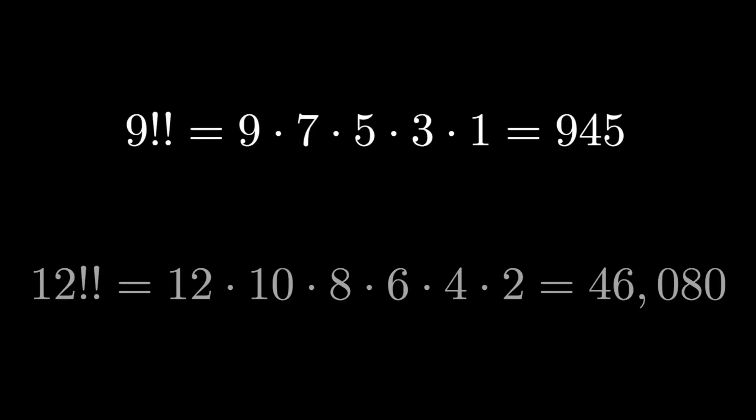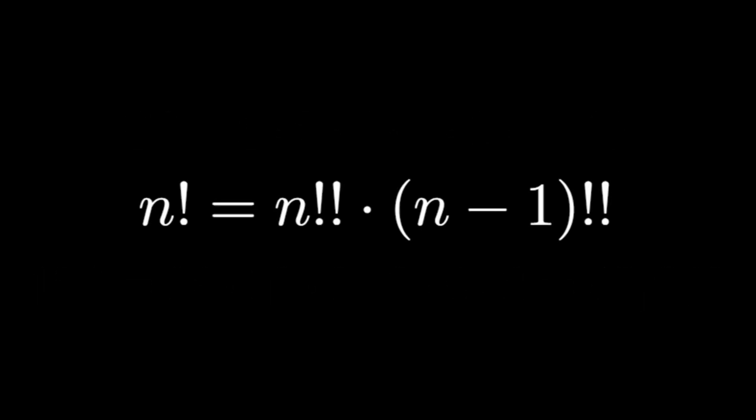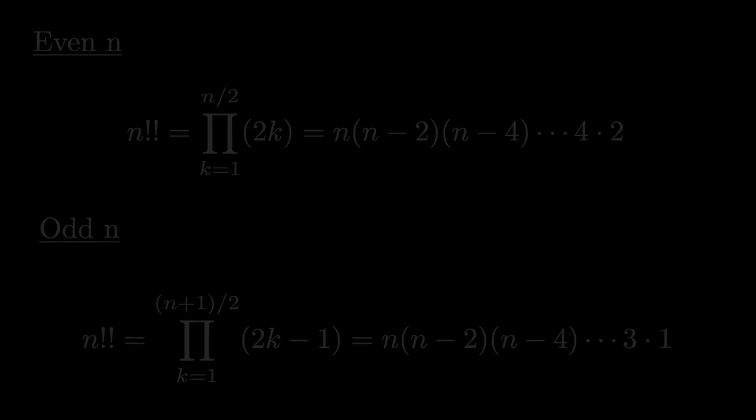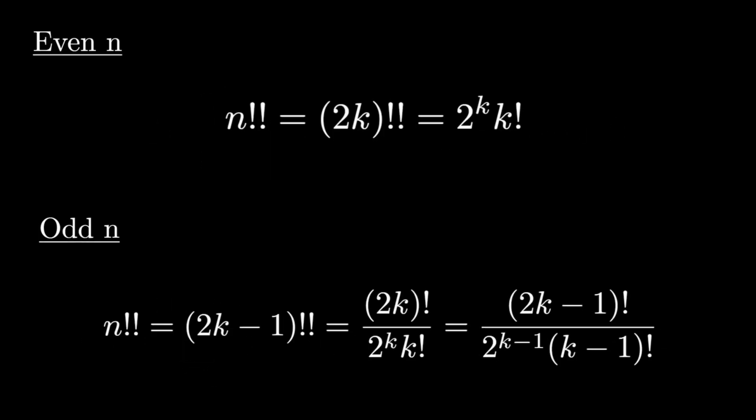The double factorial of a number n is the product of all the positive integers up to n that have the same parity as n. A factorial can be written as a product of double factorials. We can define the double factorial when n is even like this, and this is the definition for odd n. It can also be expressed using powers of two and standard factorials.